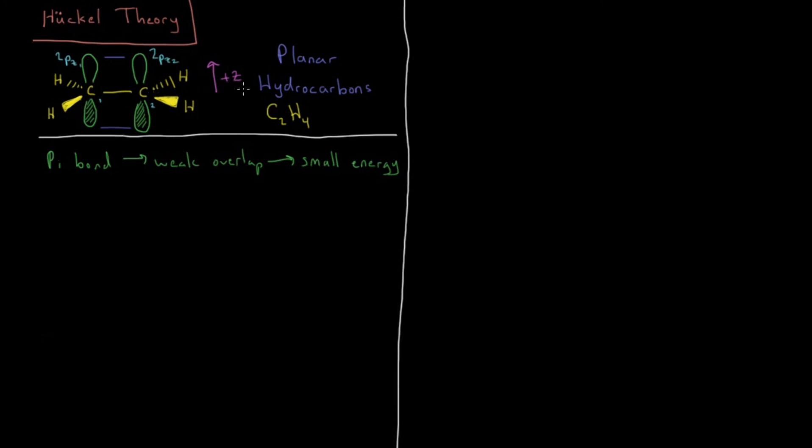So that means that the pi orbitals are kind of alone by themselves, they kind of form their own subsystem within the molecule where you can almost treat them as not interacting with the rest of the molecule. And the thing that really helps out for planar hydrocarbons in particular is that the overlap integral of that 2pz orbital with any other orbital in the molecule that isn't another 2pz orbital is going to equal zero.